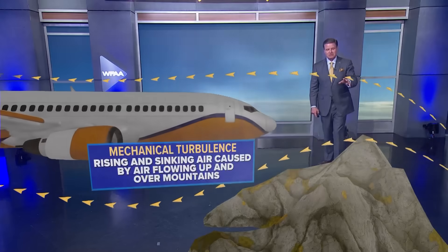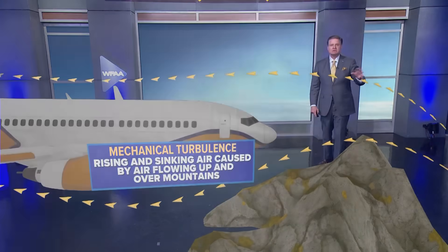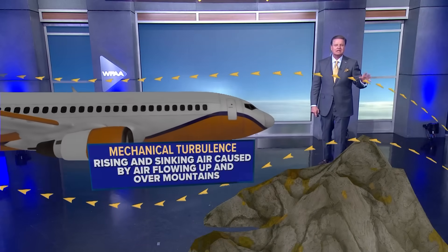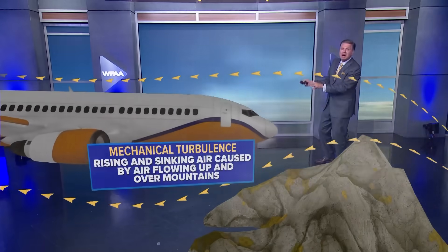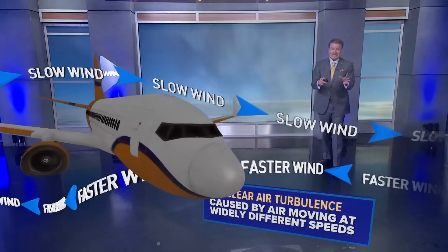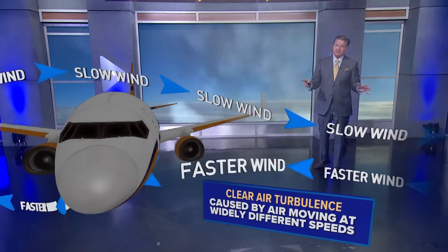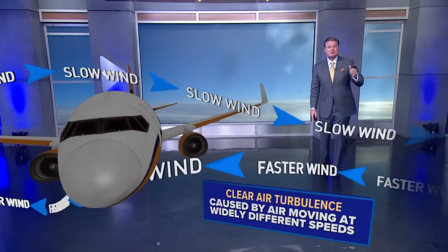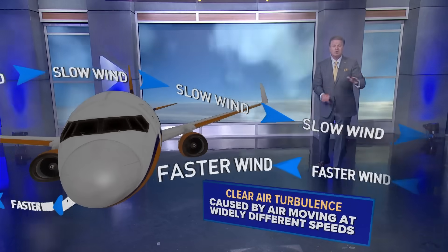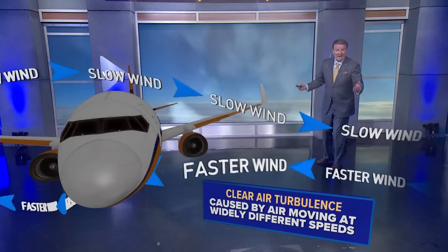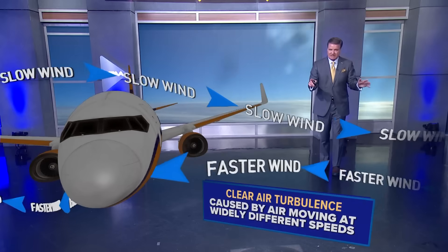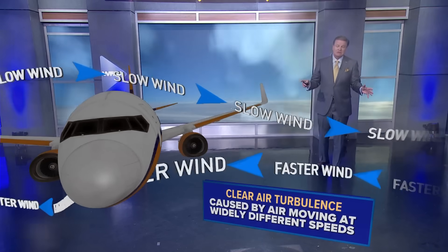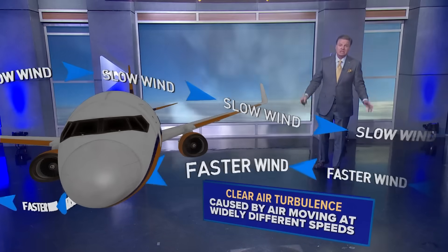We also have mechanical turbulence. If you've ever flown to anywhere in the Rockies or anywhere out west, you can have mechanical turbulence — rising and sinking air caused by air flowing up and over the mountains. And then the worst turbulence I've experienced in my life was clear air turbulence, on a flight from DFW out to Lubbock. It looks clear outside, but you have air moving at wildly different speeds and dramatically different directions. That's clear air turbulence.